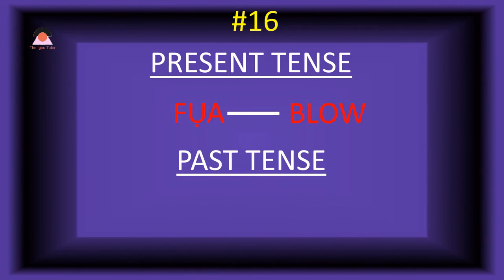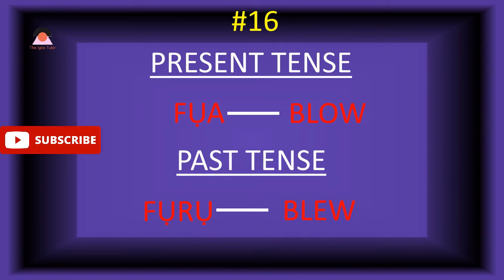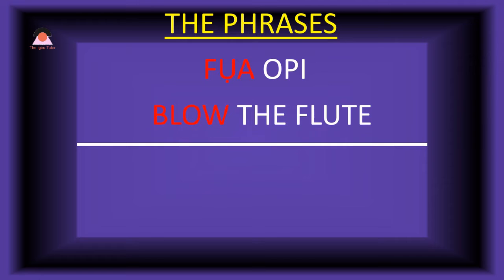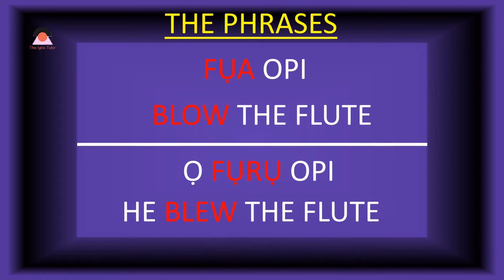Word number sixteen: 'foa,' meaning 'blow.' The past tense of foa is 'foro,' meaning 'blew.' Present tense phrase: 'foa ope' — blow the flute. Past tense: 'o-foro-ope' — he blew the flute.